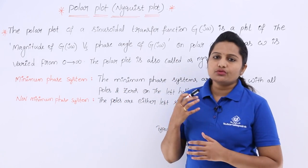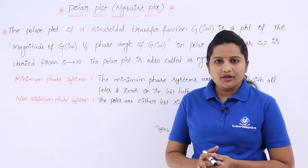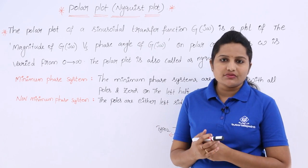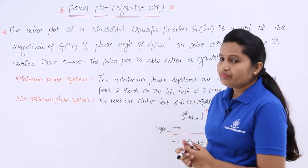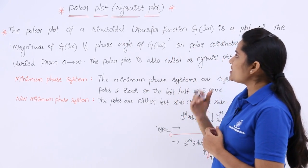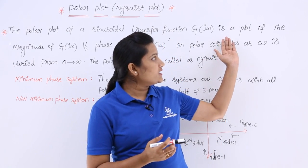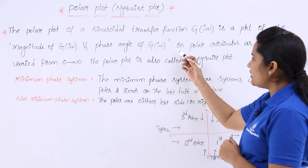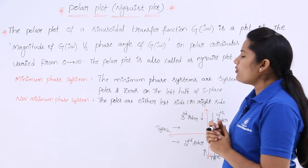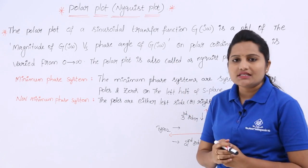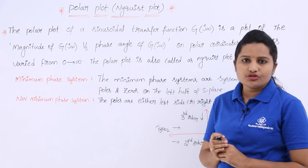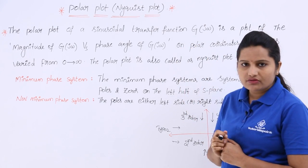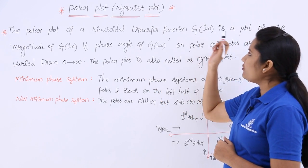So what is meant by this polar plot or Nyquist plot? The polar plot of a sinusoidal transfer function G(jω) is a plot of the magnitude of G(jω) versus the phase angle of G(jω). If you want to draw a polar plot or Nyquist plot for a transfer function, you need to consider magnitude of G(jω) versus phase angle of G(jω).